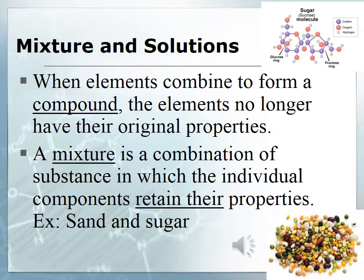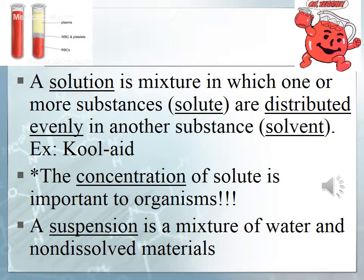For a compound, the elements no longer have their original properties. A mixture is a combination of substances in which the individual components retain their properties, such as sand and sugar. A solution is a mixture in which one or more substances are distributed evenly in another substance — an example is Kool-Aid. The Kool-Aid and sugar would be the solute; the solvent would be water. The concentration of solute is important to organisms.